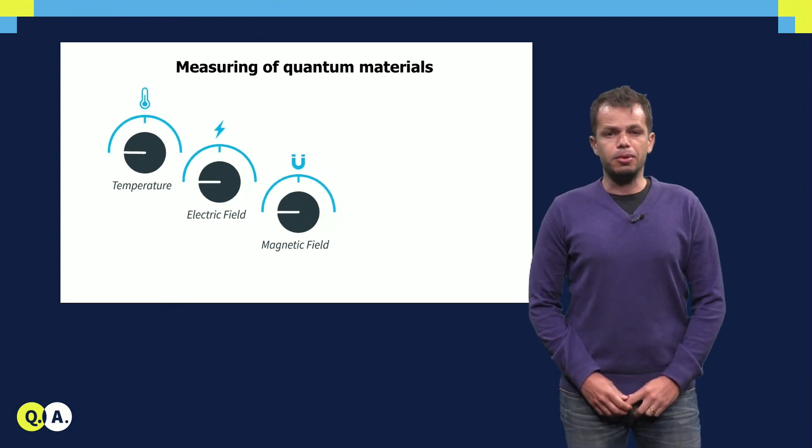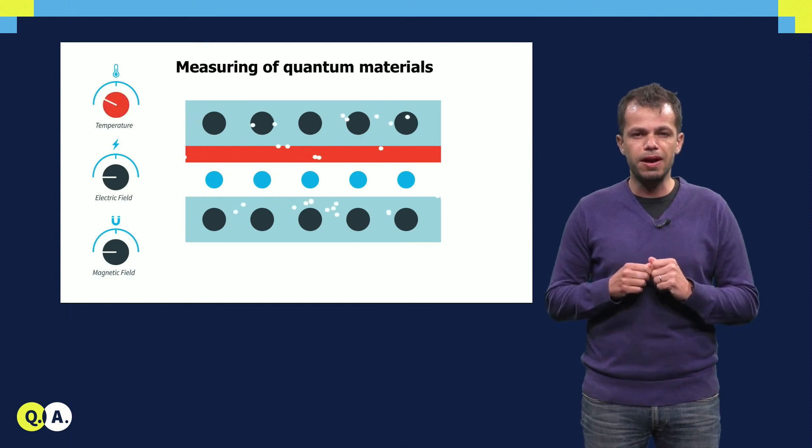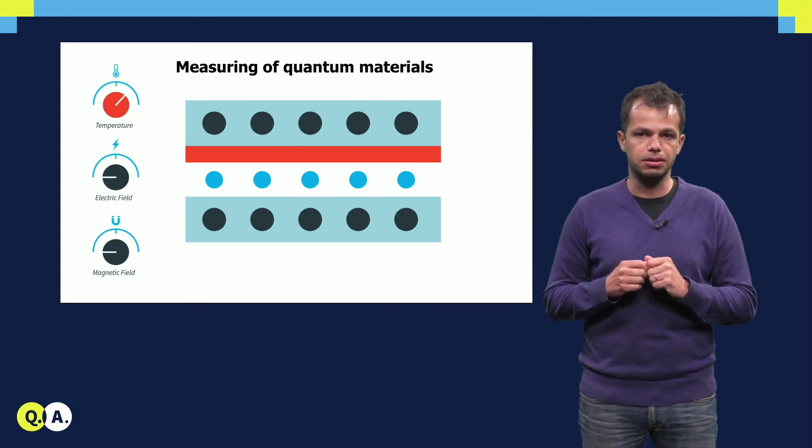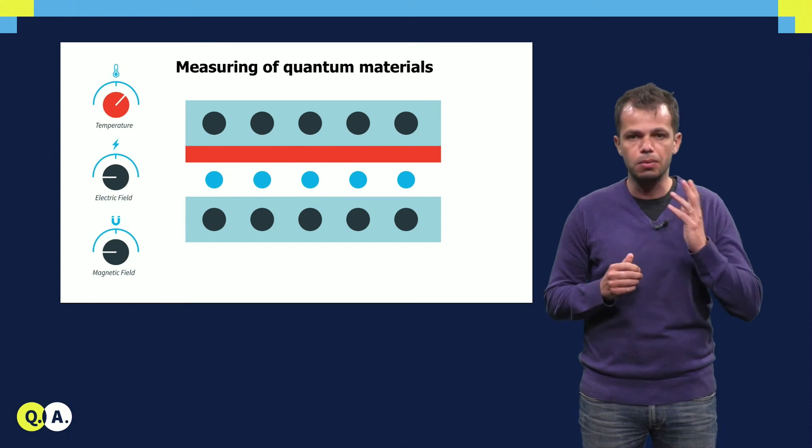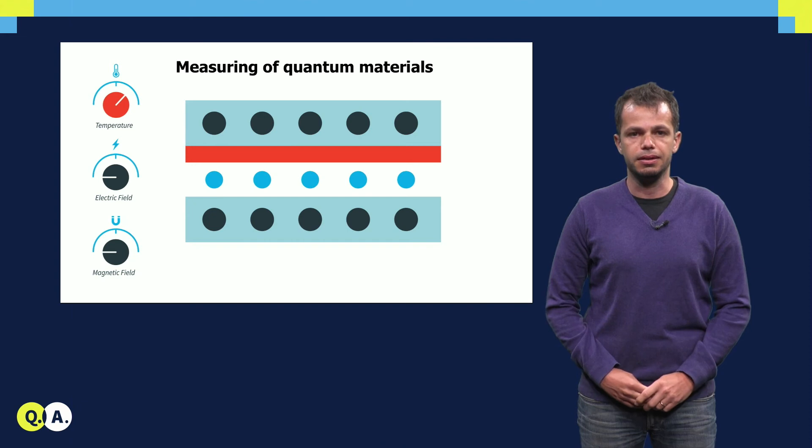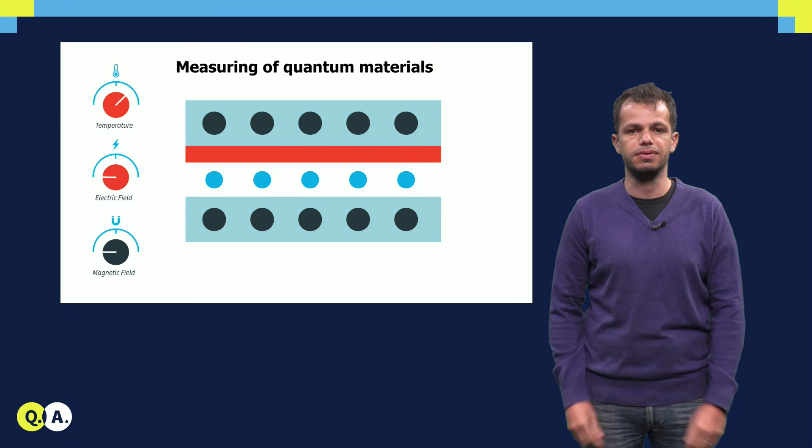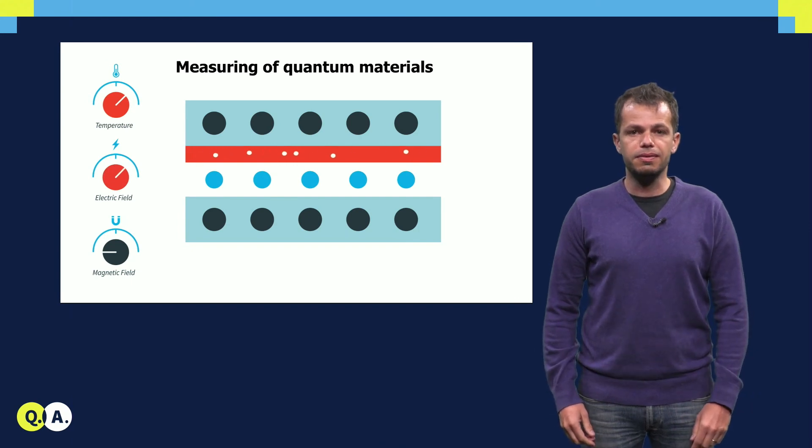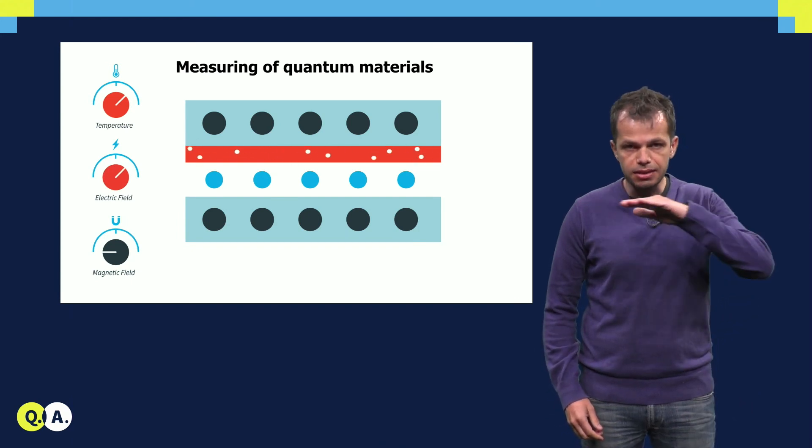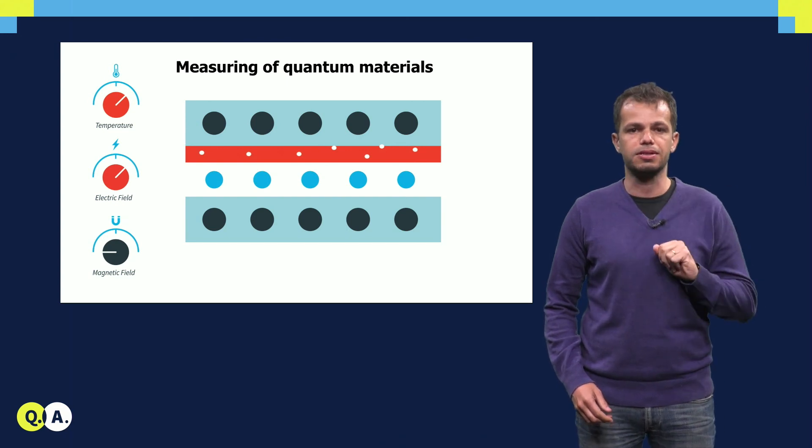Take, for example, the silicon heterostructure we mentioned earlier. If we cool it down to very low temperatures, at which qubits usually operate, say below 1 degree above absolute zero, it would be insulating. However, we can make the material conducting by imposing a vertical electric field. The electric field forms a metallic channel at the interface between silicon and silicon germanium, which is then populated by electrons.